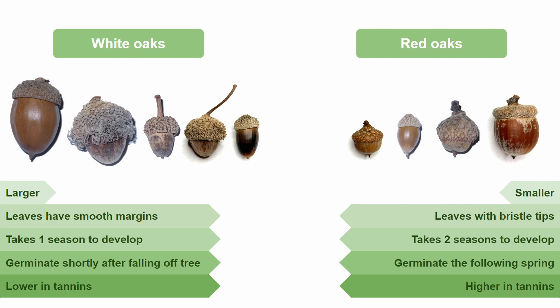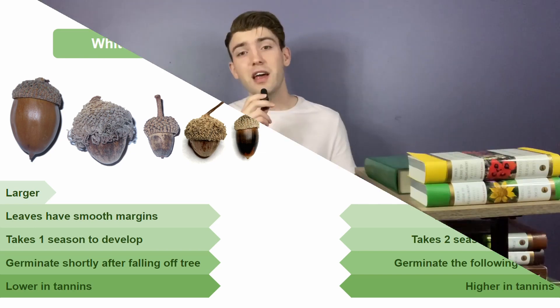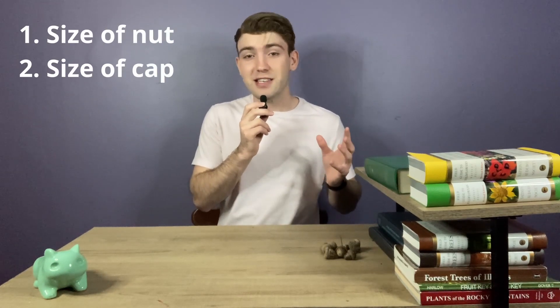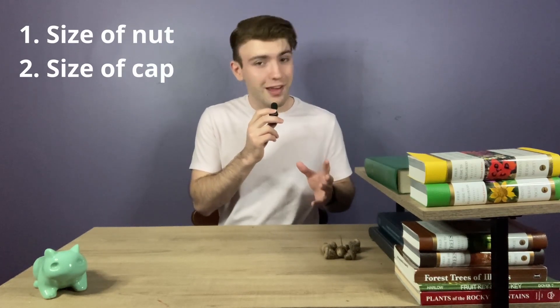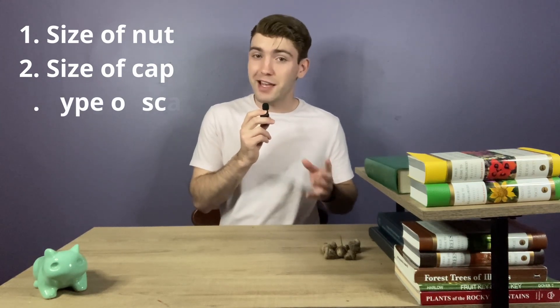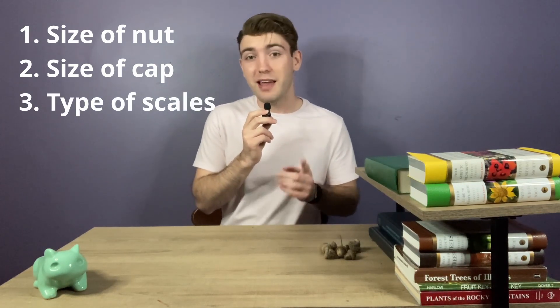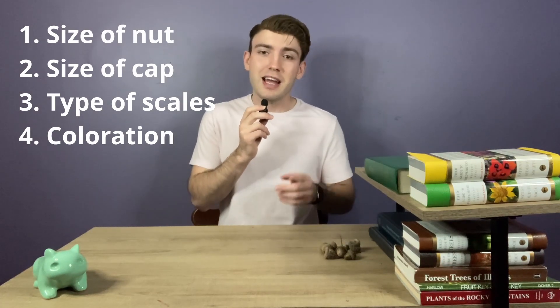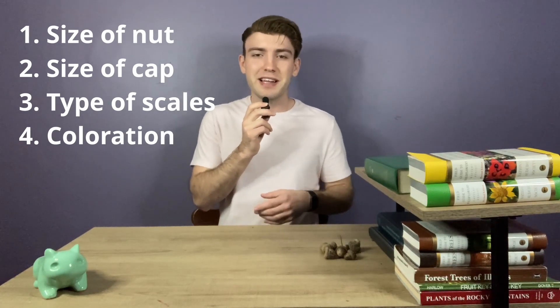As a fun fact, oak trees are known to regulate how many acorns they produce, and they'll sync up with their neighboring oak trees so that they're all on the same acorn production schedule. A few different features can be used to identify an acorn: mainly the overall size of the nut, how much of the nut is covered by the acorn cap, the type of scales that make up the acorn cap, and the overall coloration of the acorn. Now let's start with identifying the white oak group.